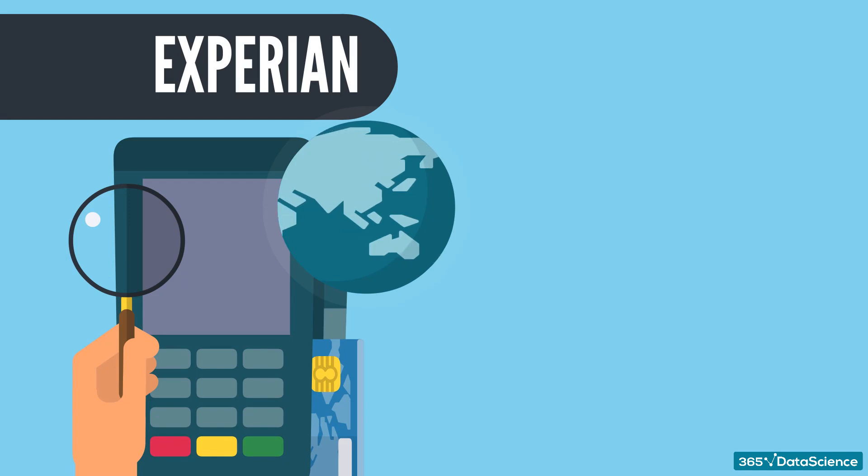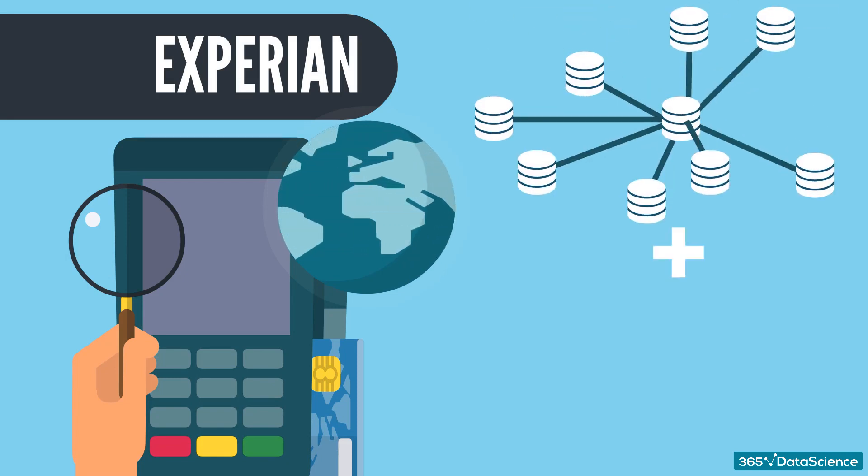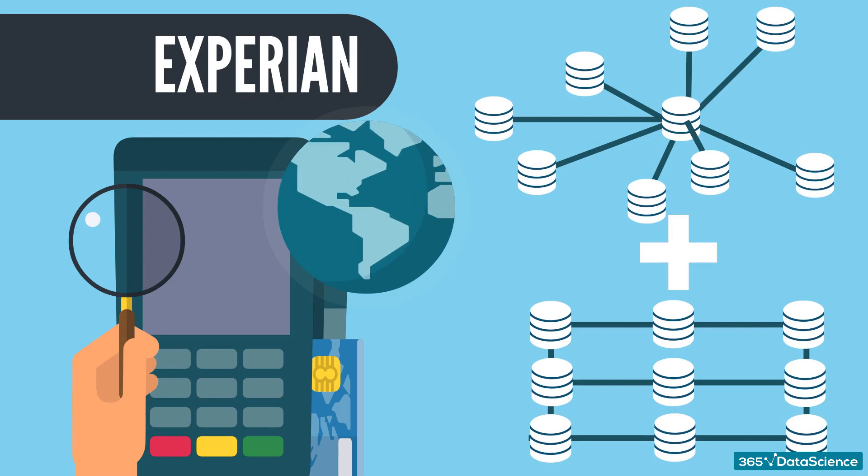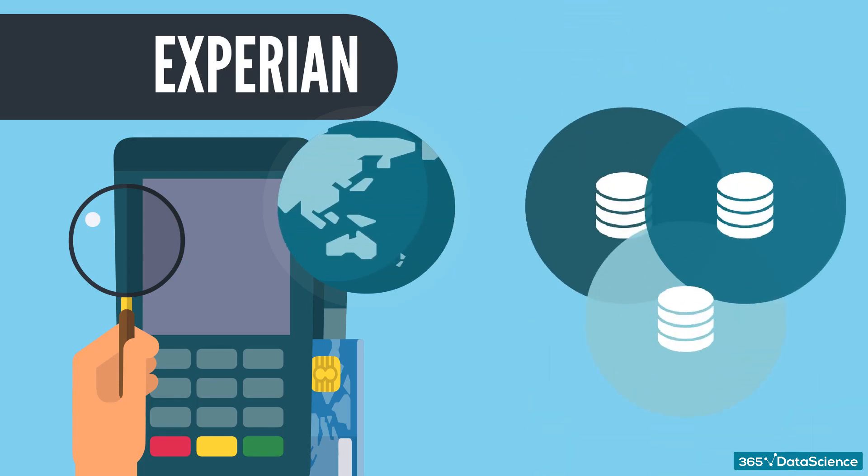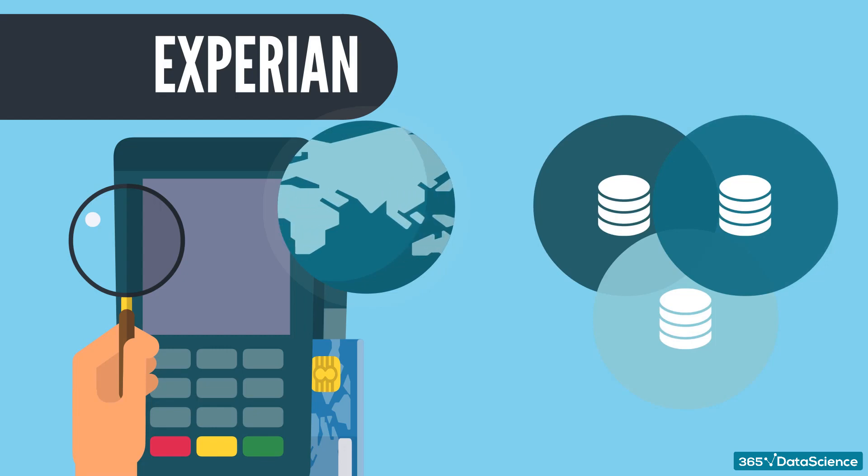In this case, IBM's team helped Experian leverage unstructured data and combine it with structured data that was traditionally used in Experian's models, to build a more comprehensive view of the businesses Experian is hired to analyze.